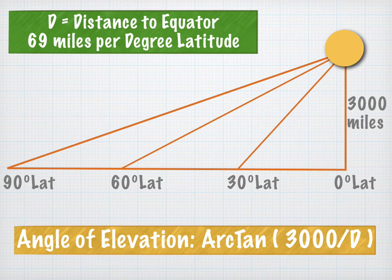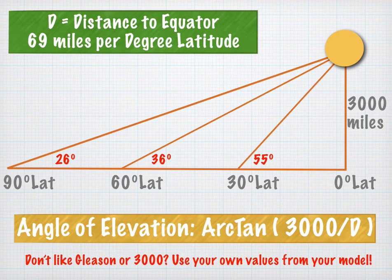And this works in the Northern Hemisphere and the Southern Hemisphere equally. In this particular example, we calculated this to be 26 degrees, 36 degrees, and 55 degrees using that arctangent. And again, you can substitute your own values from your model.